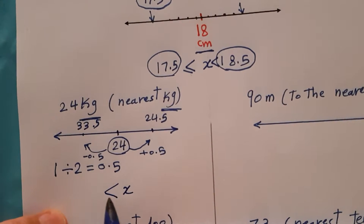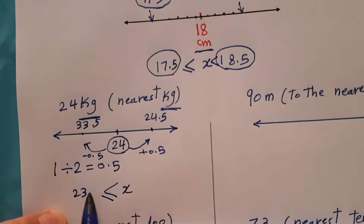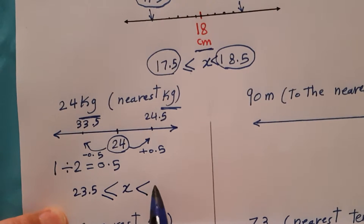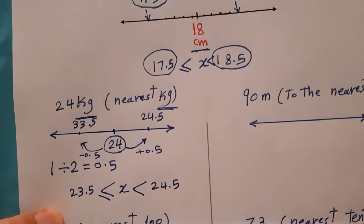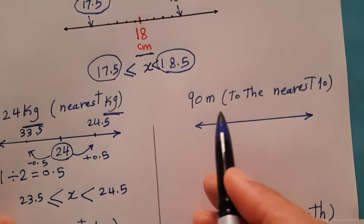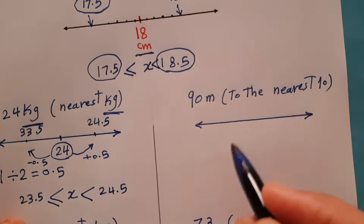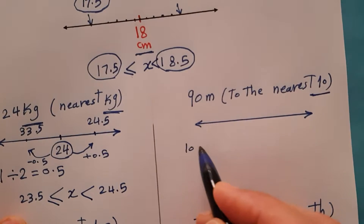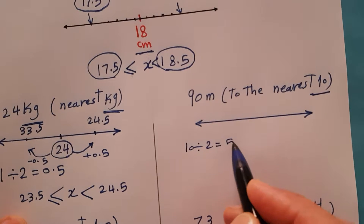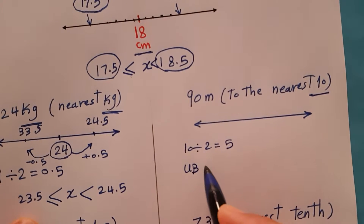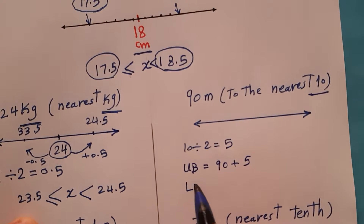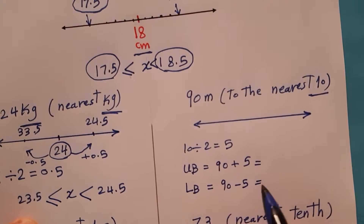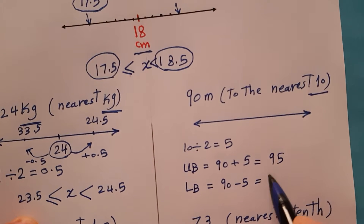Next question: 90 meters to the nearest ten. Take the unit 10, divide by 2, gives you 5. So the upper bound equals 90 plus 5, and the lower bound equals 90 minus 5. Very easy — 95 and 85.